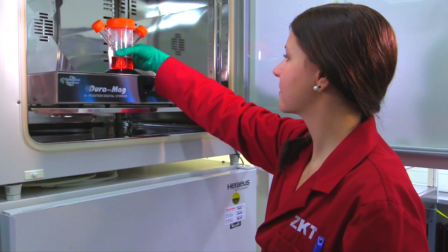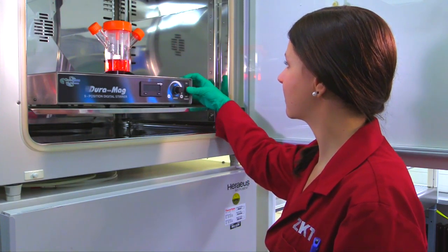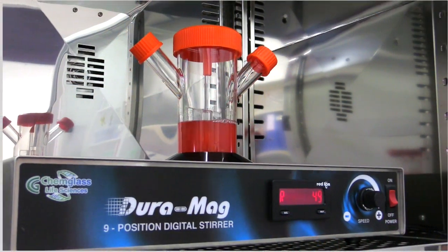Now, the spinner flasks are conditioned for one hour in the incubator at 37 degrees Celsius and 7.5% CO2.